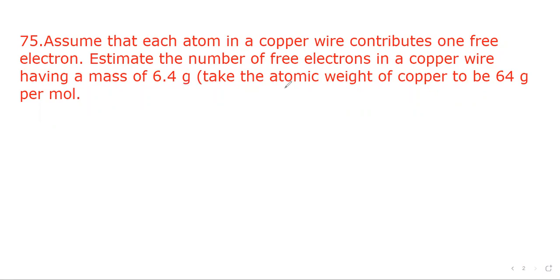Assume that each atom in a copper wire contributes one free electron. Estimate the number of free electrons in a copper wire having mass of 6.4 grams, taking the atomic weight of copper to be 64 grams per mole. Let's find out number of moles. Number of moles equal to given mass divided by atomic weight, 6.4 divided by 64, that would be 1 by 10.